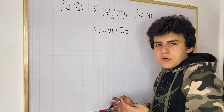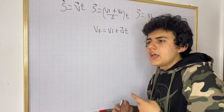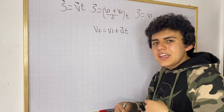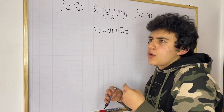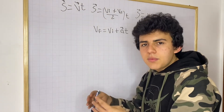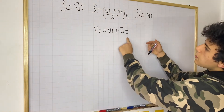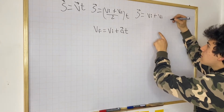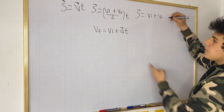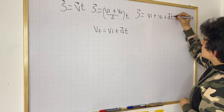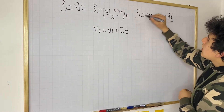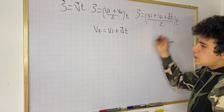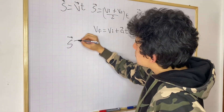Acceleration describes how much the velocity will increase, and time says for how long it increases — when an object is moving, this describes the final velocity it will reach. So we can now replace final velocity in our displacement equation, giving us: displacement equals initial velocity plus (initial velocity plus acceleration times time), all divided by 2, multiplied by time. We can then distribute the denominator into both terms on top.